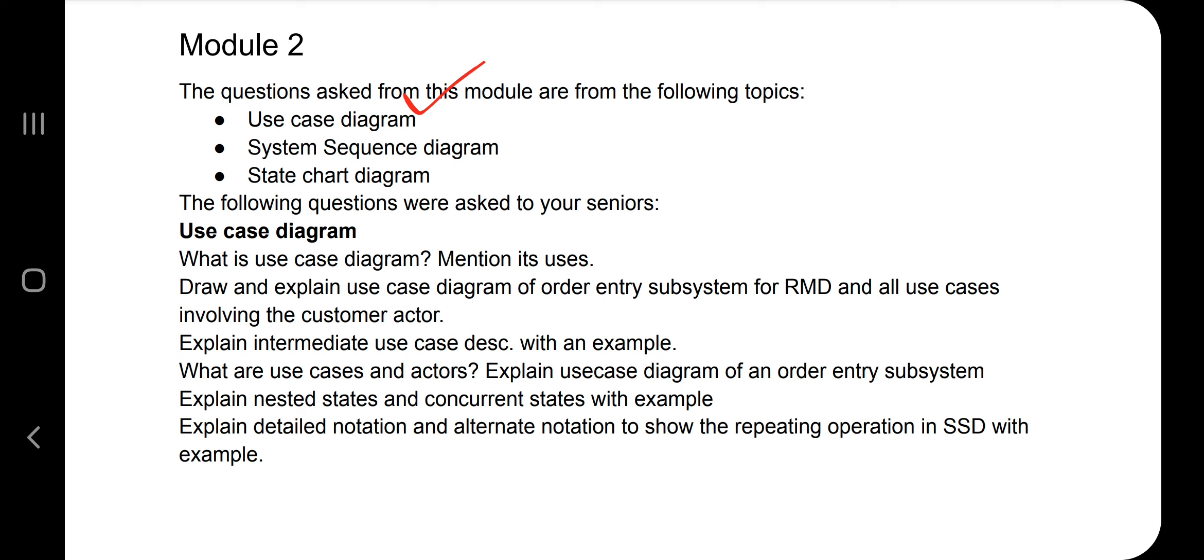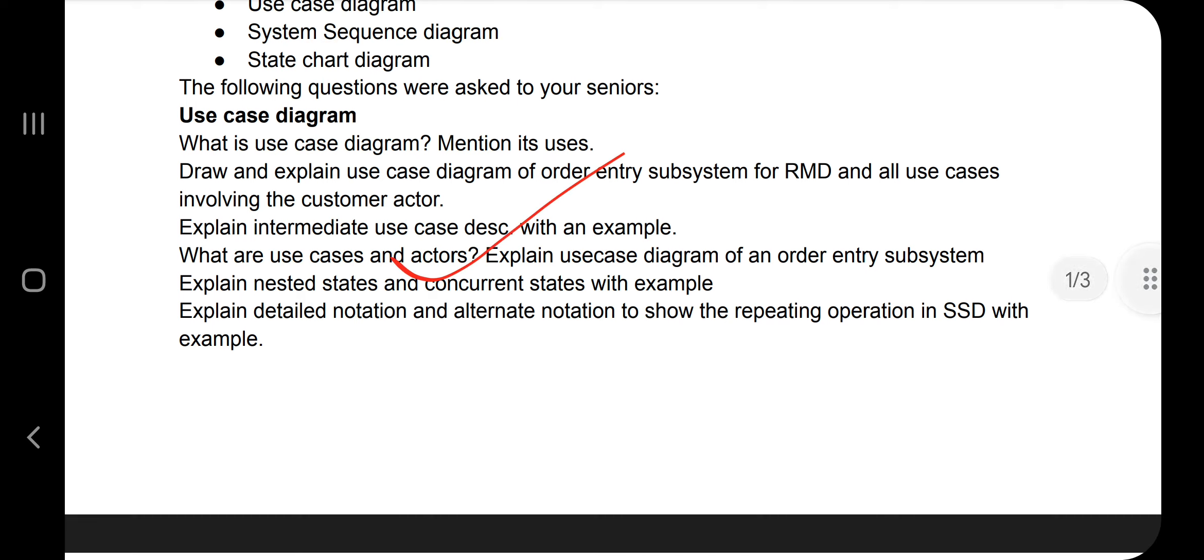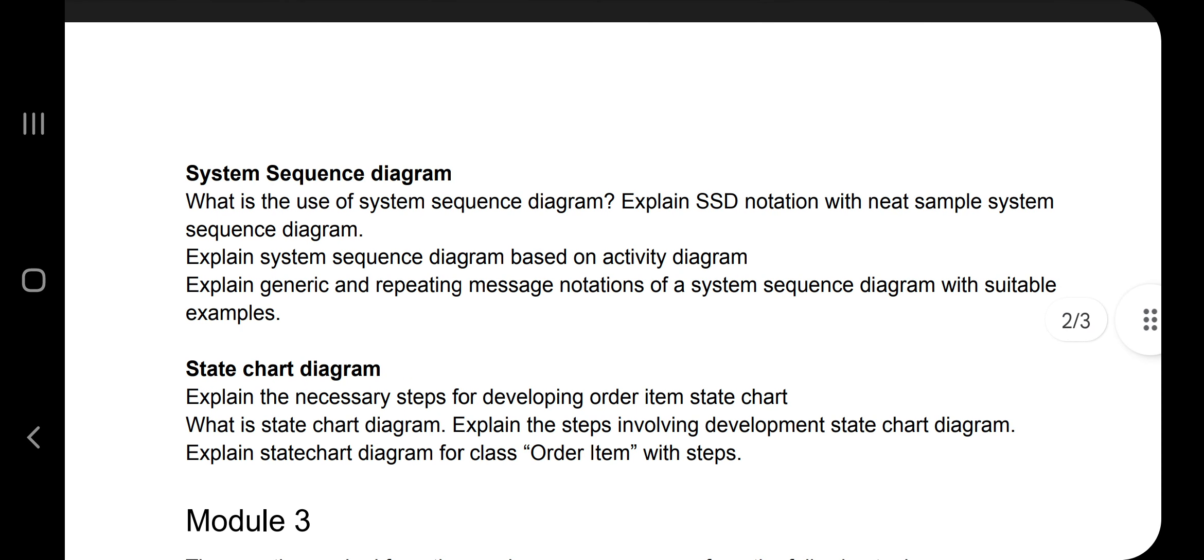Moving on to Module 2, we have the important topics: Use Case Diagrams, System Sequence Diagram, and State Chart Diagram. The important one is the System Sequence Diagram. From use case diagrams, there are different use case diagrams for different scenarios. From system sequence diagram, what are the different sequence diagrams based on activity diagram and generic and repeating messages.